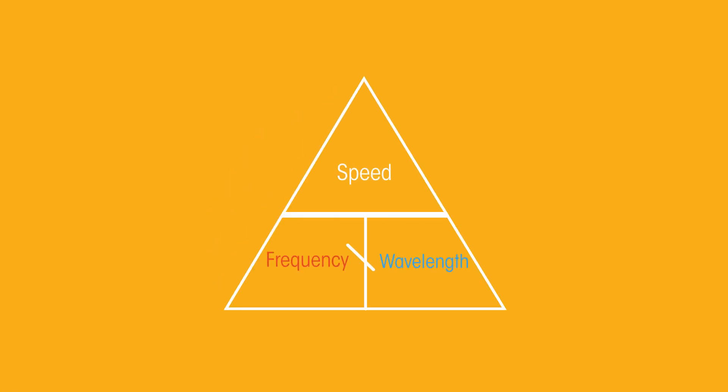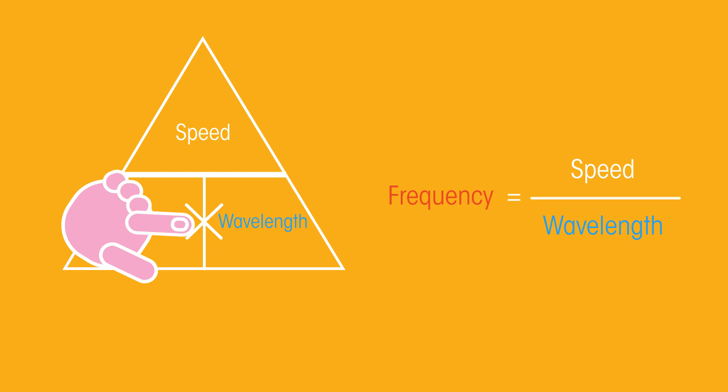So far, we've been calculating the speed, but we could just as easily be asked to calculate the wavelength or frequency. We simply need to rearrange the formula. For frequency, put your finger over frequency, and it equals speed divided by wavelength, and the same for wavelength.